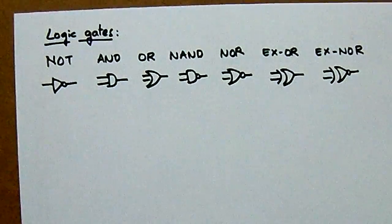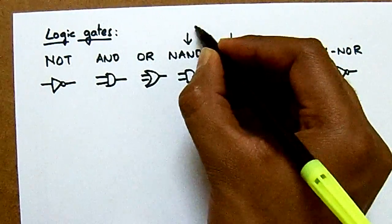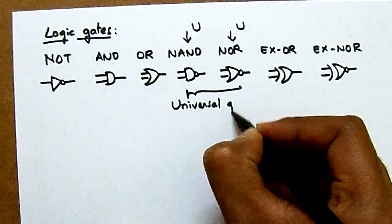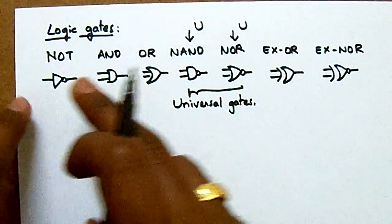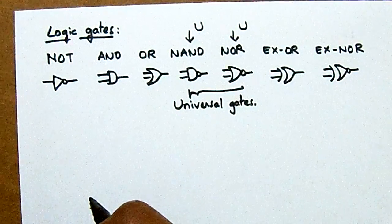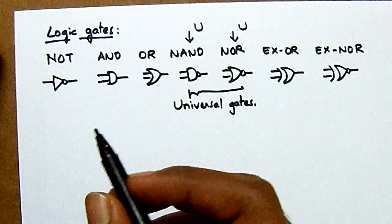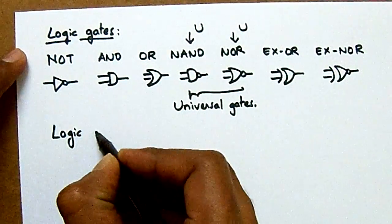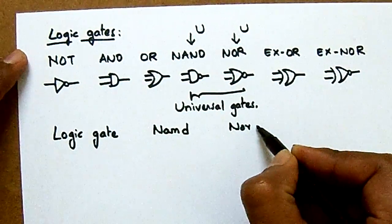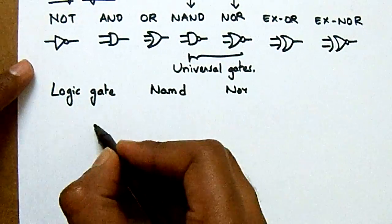What are universal gates? We call NAND gate and NOR gate as universal gates. The reason is that we can represent any of the logic gates using these two universal gates. Now let us represent each and every logic gate in terms of NAND gate and also in terms of NOR gate.